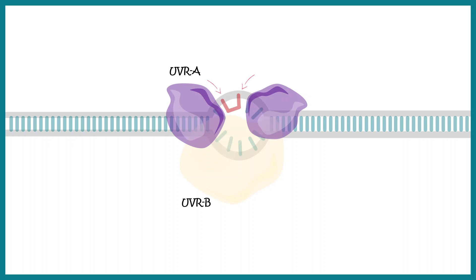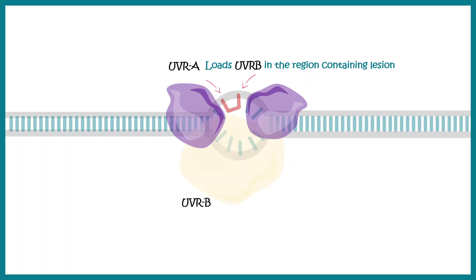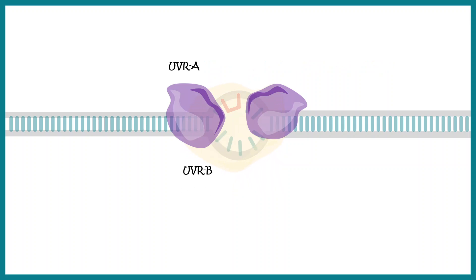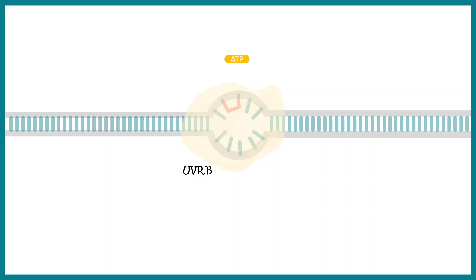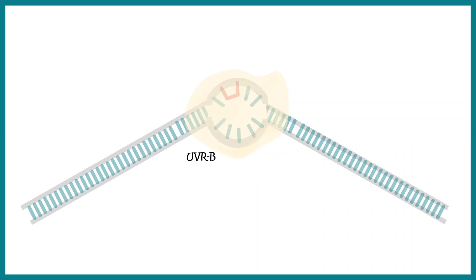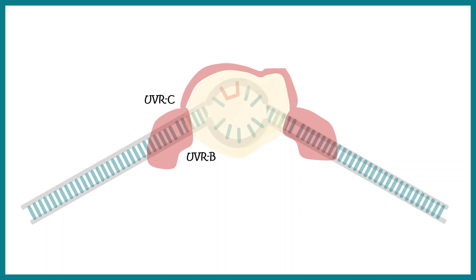The key component that detects the DNA distortion is the UvrA protein. Once it detects the distortion, it will recruit the UvrB protein to the site of the lesion, and this recruitment requires hydrolysis of ATP because this is quite an energy-expensive process. After UvrB is recruited to the site of the lesion, there would be a bending of this DNA segment.